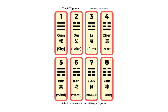The number one Qian Gua is related to sky. The number two Dui Gua is related to lake. The number three Li is related to fire. The number four Zhen is related to thunder. The number five Xun Gua is related to wind. Number six Kan is related to water. And number seven Gen Gua is related to mountain.